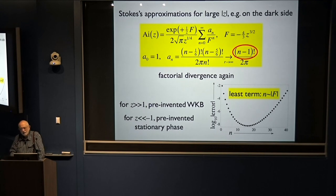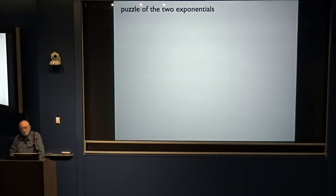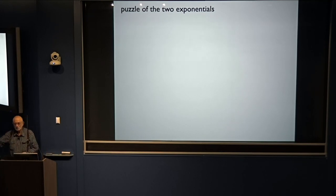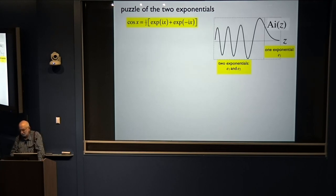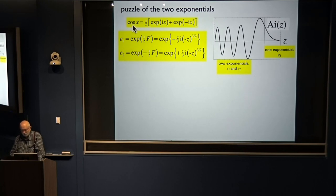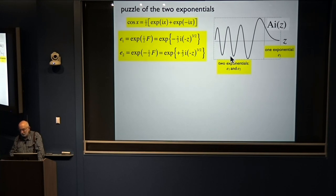Any other lesser scientist would have been very happy at that. But Stokes was much deeper. He realized there's a puzzle. Here's a function: on one side it has one exponential; on the other side there are two, because of the cosine. One exponential, call it E1 — this small exponential, f is negative here. And the other is E2, but that only exists on the bright side. So where does this second exponential come from?